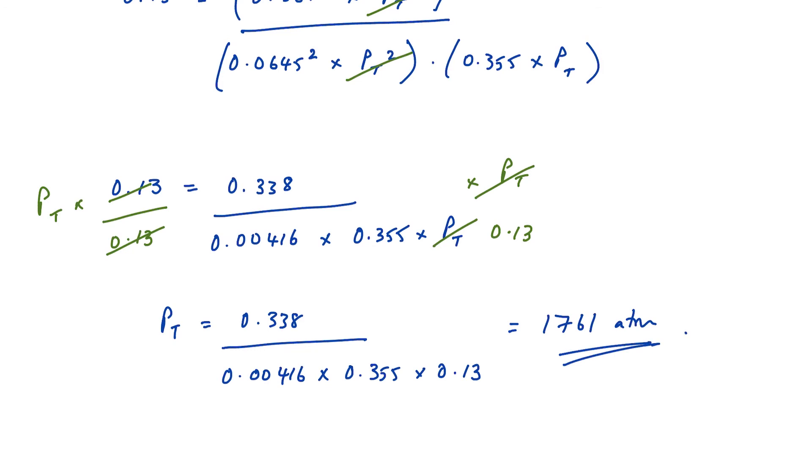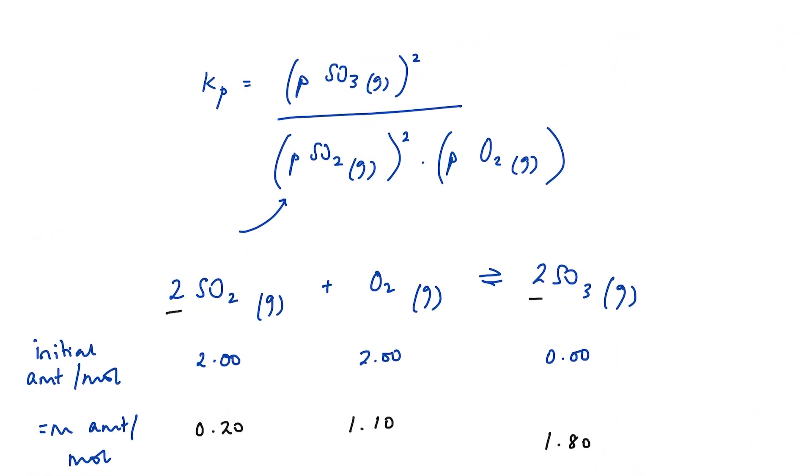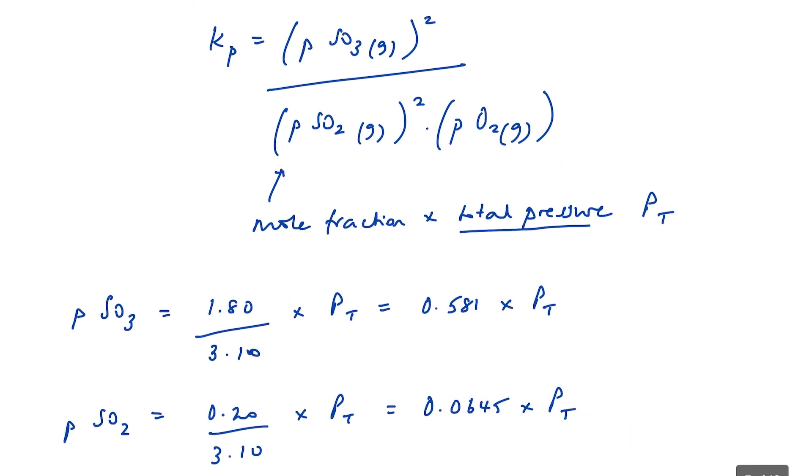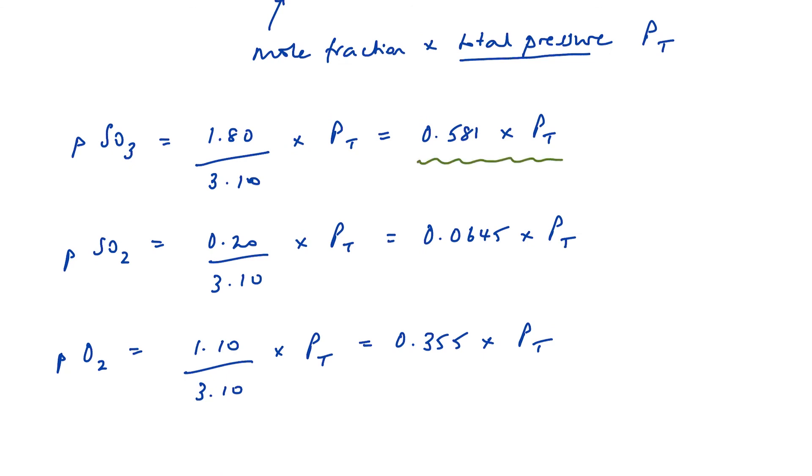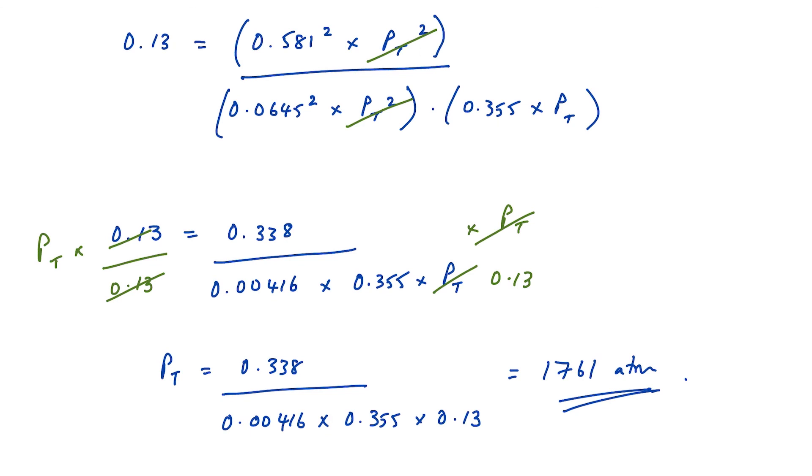So the key with these questions is to always start with your expression. Because from there, we can work out what we need to find out in order to be able to sort out this question. These grids are a very useful way of ordering the information and being able to make sense and use our ratios and not get ourselves into a muddle. From there, we were able to work out the partial pressures or at least an expression for each of the partial pressures, which we could then use in our equation for Kp and come out with an answer for total pressure.